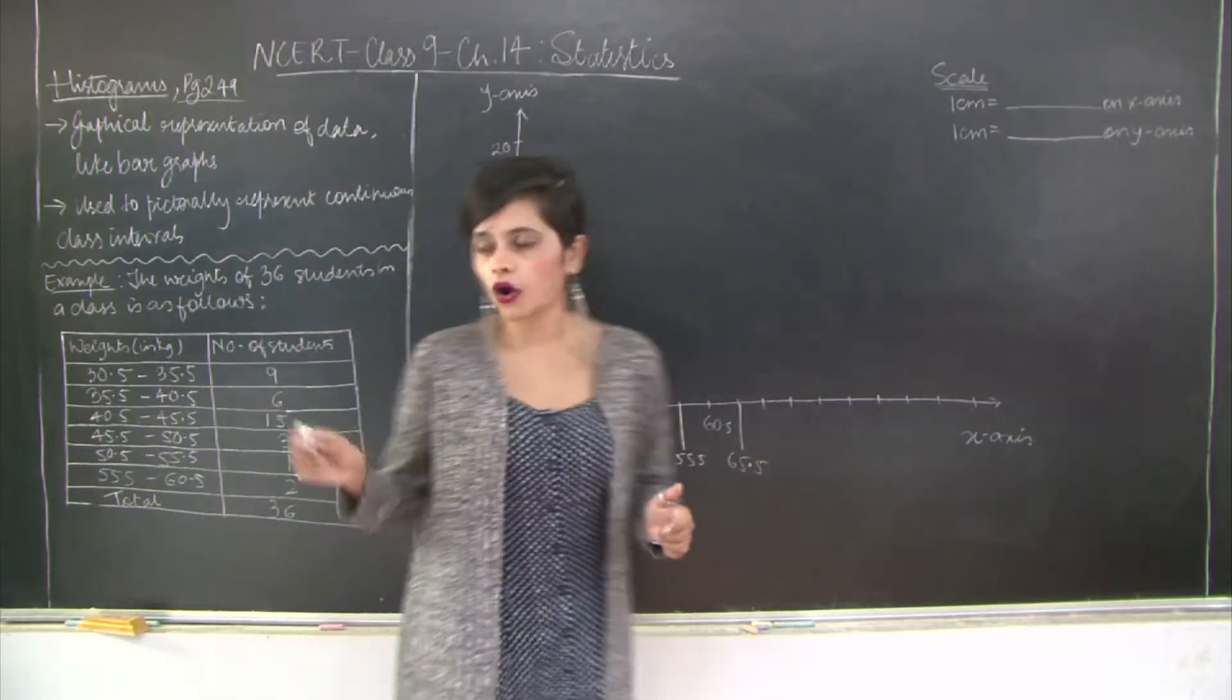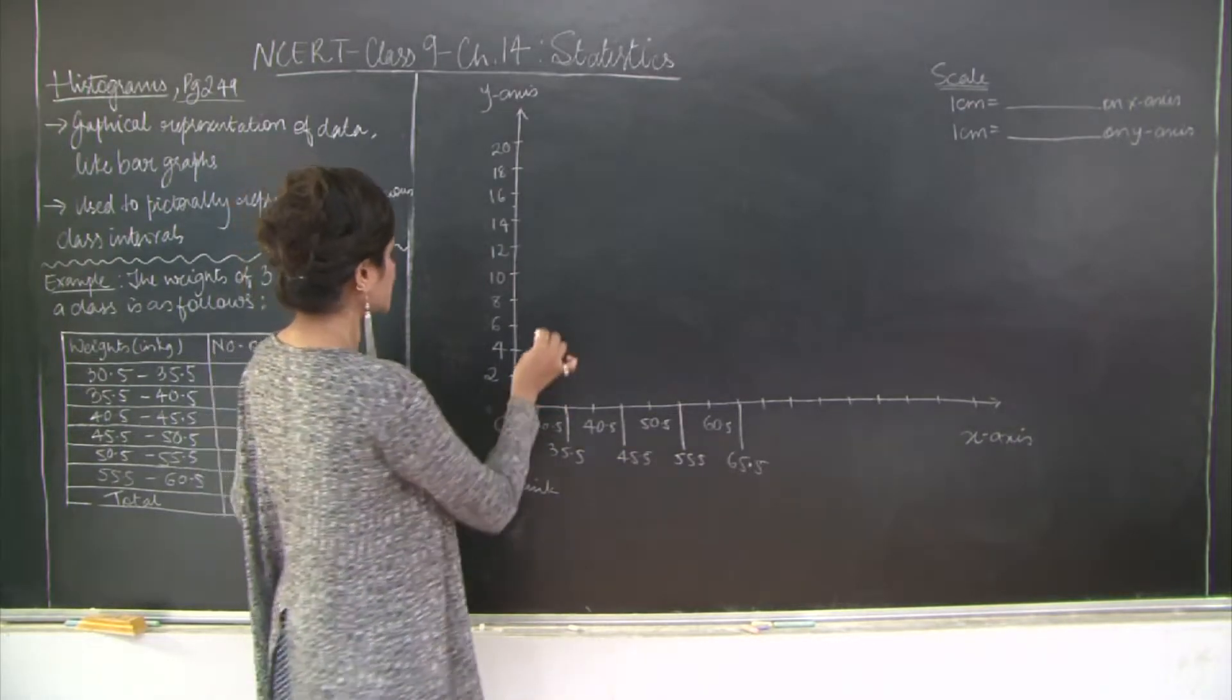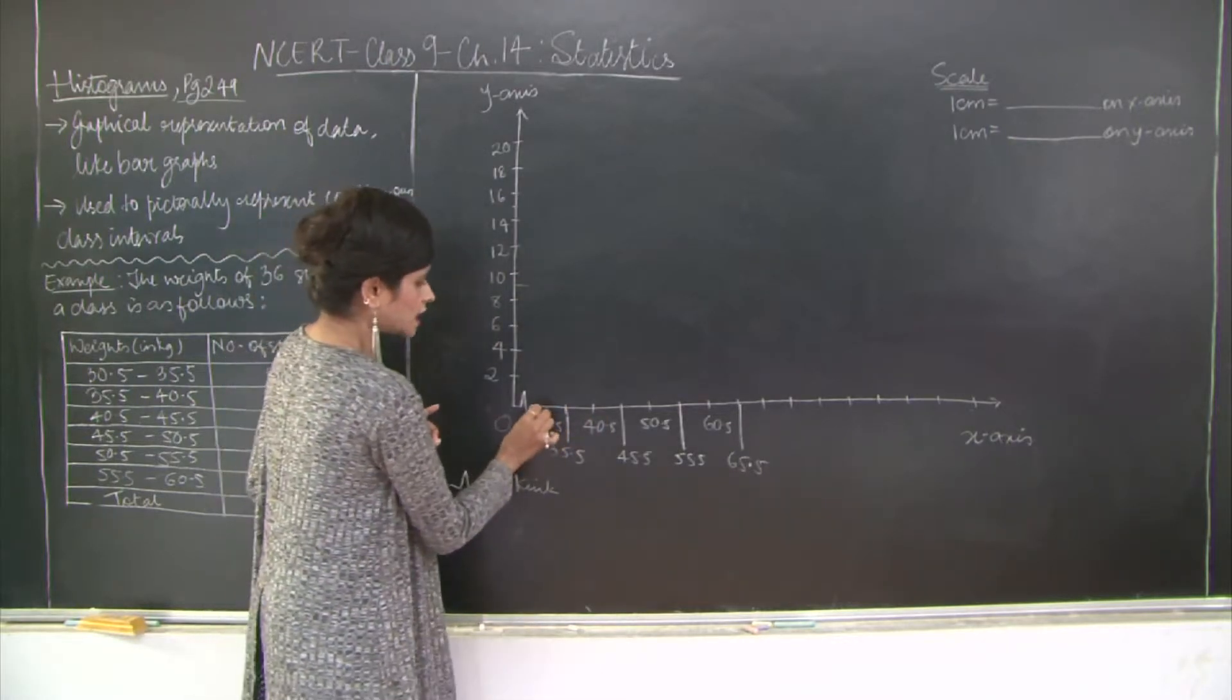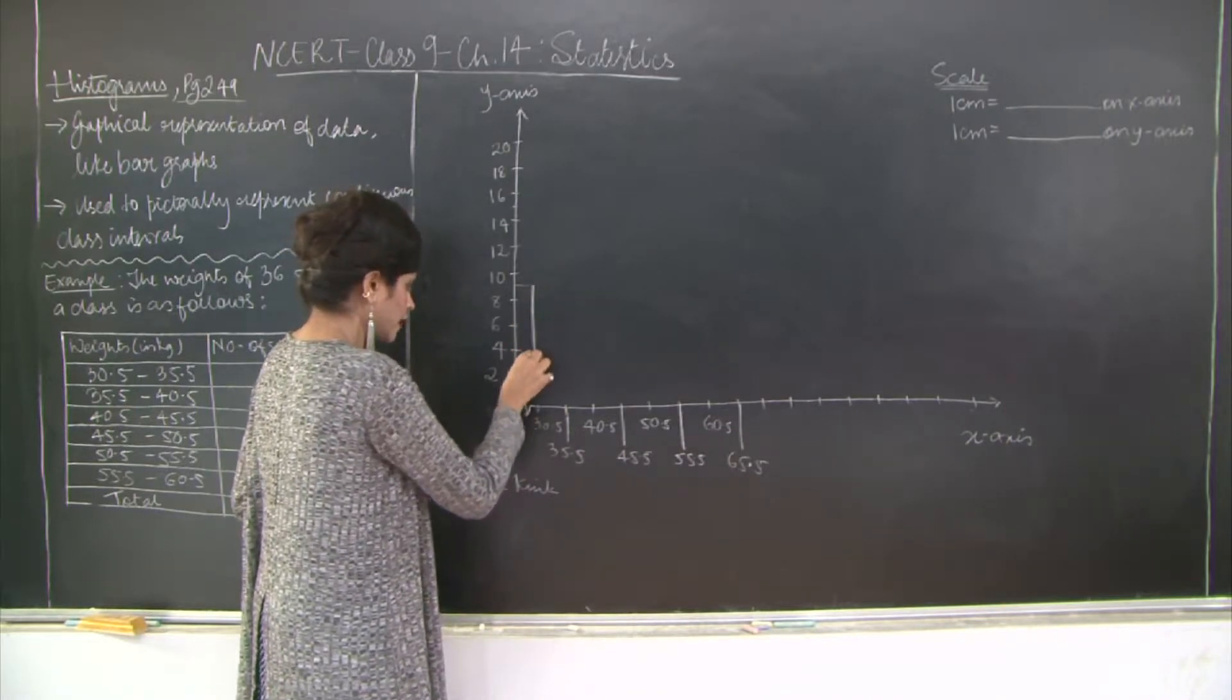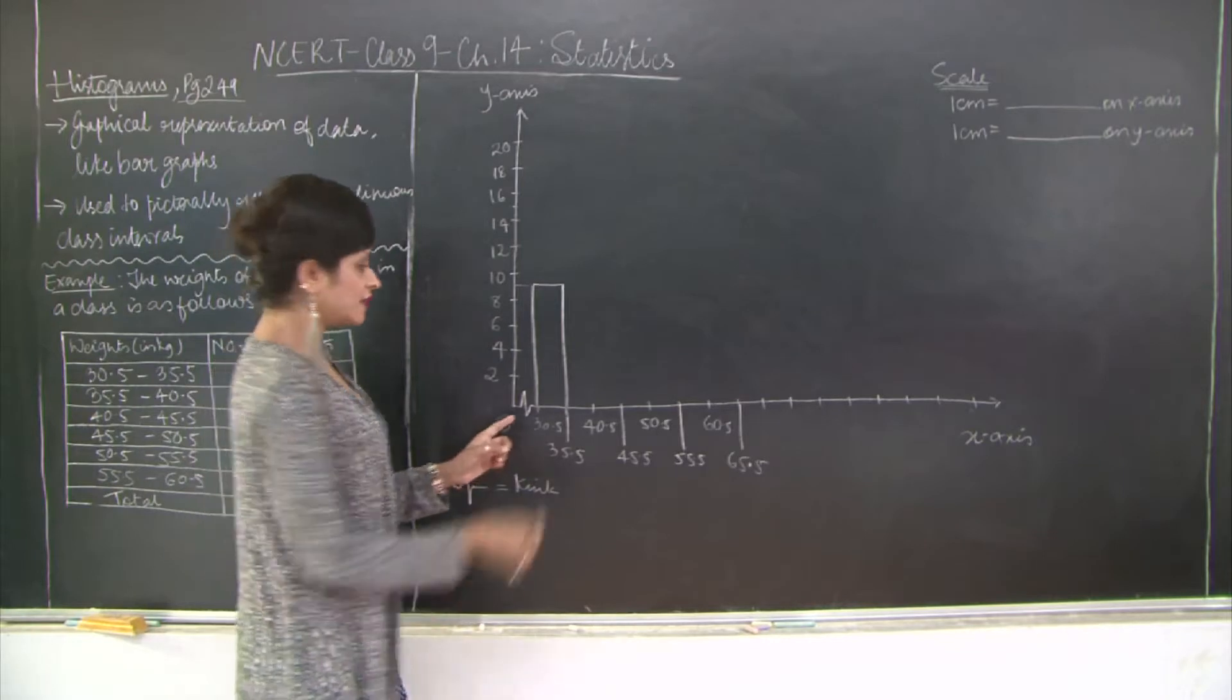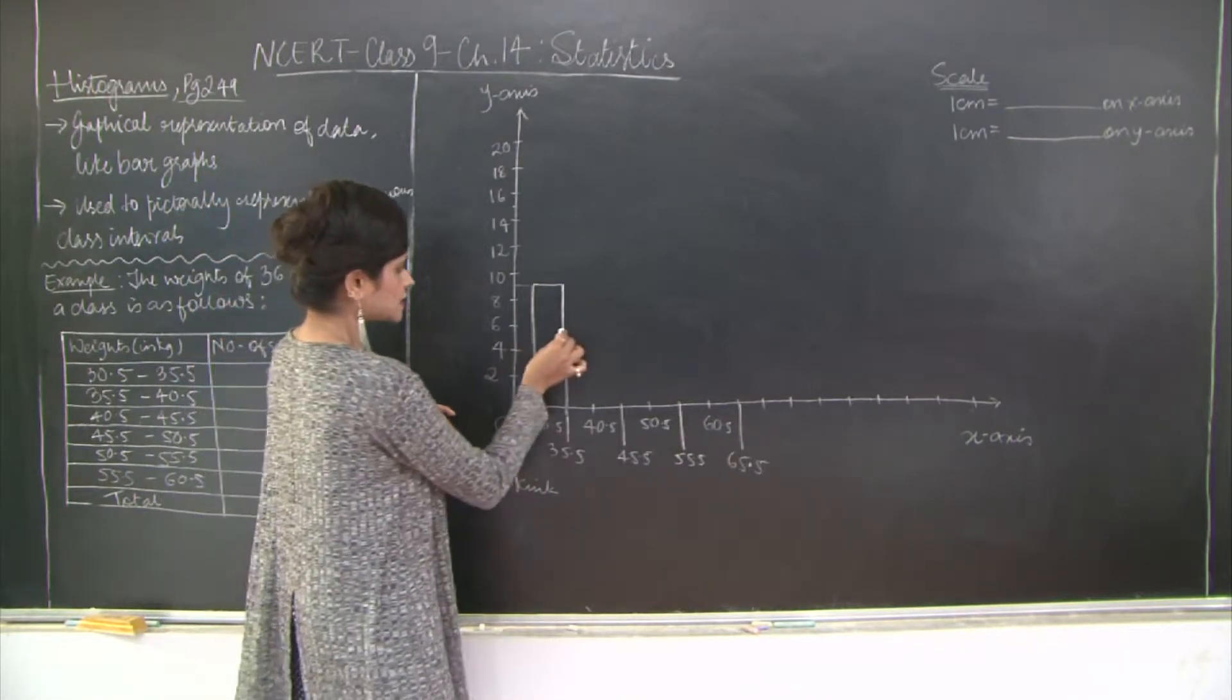Now we plot these frequencies on the coordinate axis. The first one is 9, so 9 is for the class interval 30.5 to 35.5. The class interval 35.5 to 40.5 has a count of 6, so 6 is going to be here.